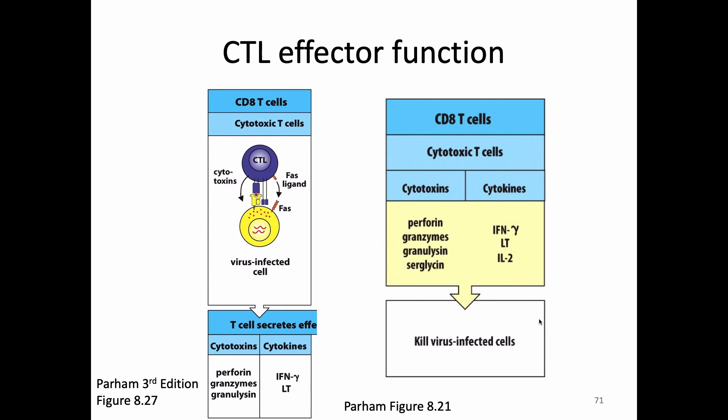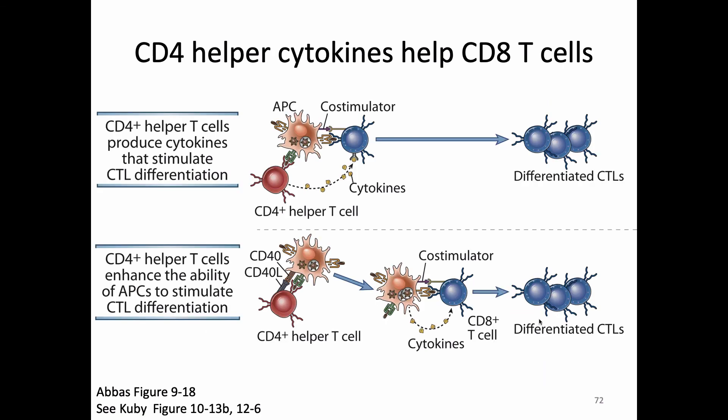CTLs also release other products. The most common is the cytokine interferon gamma, so sometimes when CD8 T-cell responses are measured we're actually measuring the interferon gamma response from the T-cells. Finally, in order for a CD8 T-cell to be the best differentiated CD8 T-cell, it has to get help from a CD4. So we'll talk about CD4 T-cells on Monday.